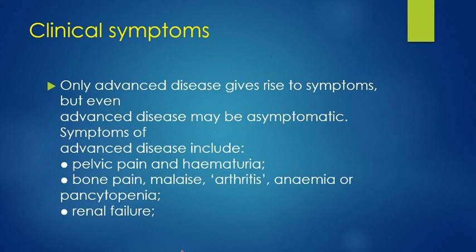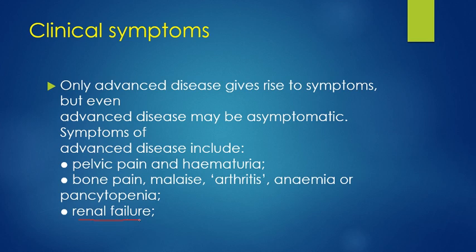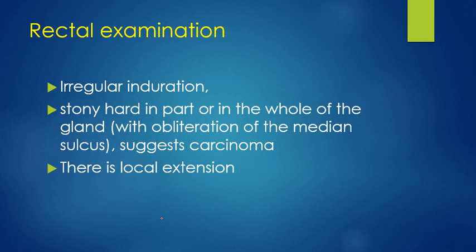Only advanced disease gives rise to symptoms. Symptoms may include pelvic pain, hematuria, dysuria, bone pain, malaise, anemia, pancytopenia, and renal failure. Pelvic pain arises due to urine outflow obstruction, which causes back pressure and can lead to renal failure.